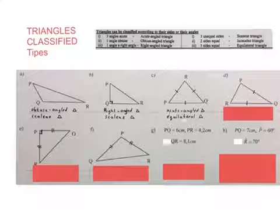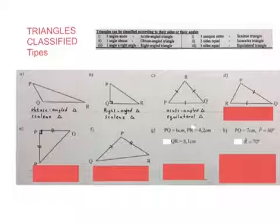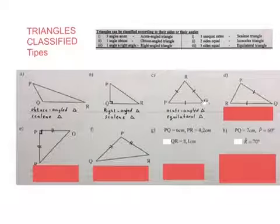This is an acute angled triangle because all three of the angles are acute, and it's also called an equilateral triangle — that's the more common name because all the laterals, or sides, are equal.